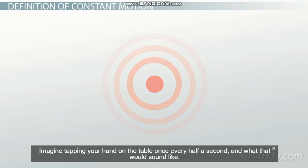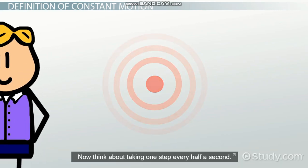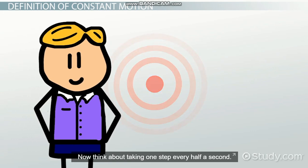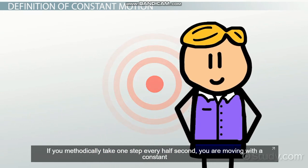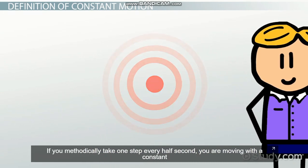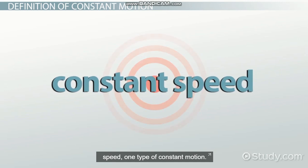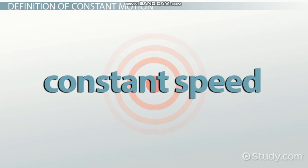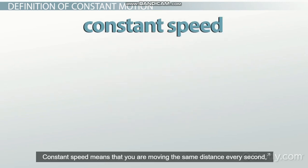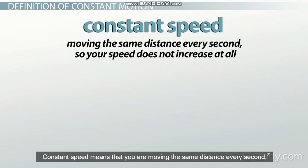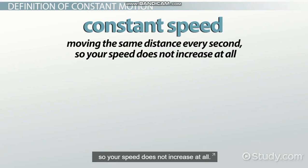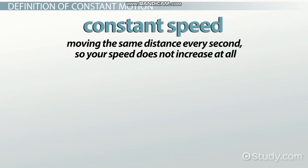Imagine tapping your hand on the table once every half a second. Now think about taking one step every half a second. If you methodically take one step every half second, you are moving with a constant speed — one type of constant motion. Constant speed means that you are moving the same distance every second, so your speed does not increase at all.